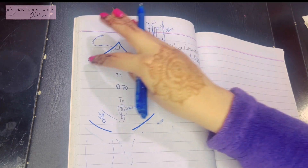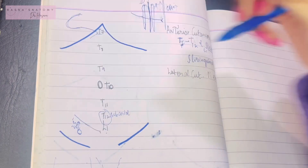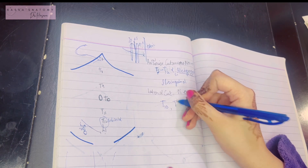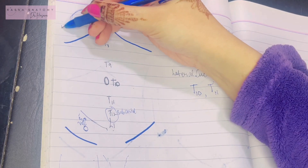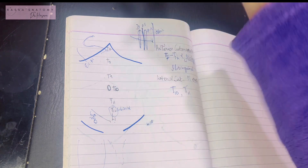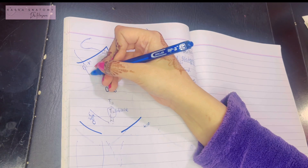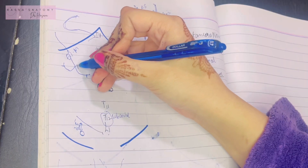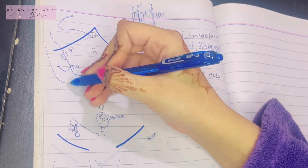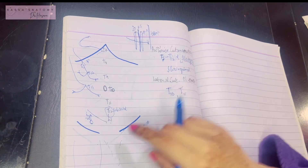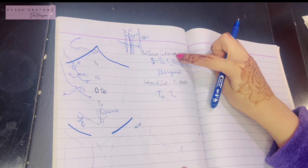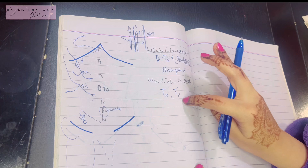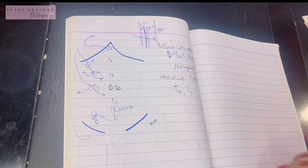Now let's talk about the lateral cutaneous nerves, which supply the anterolateral portion of the abdomen. These are only derived from the T10 and T11 intercostal nerves. These nerves pierce the external intercostal muscle, then divide into a large anterior branch and a short posterior branch to supply the lateral side of the skin. The lateral cutaneous branches of the subcostal and ilio-hypogastric nerves are responsible for supplying the gluteal region. Only T10 and T11 supply the lateral side of the abdomen.